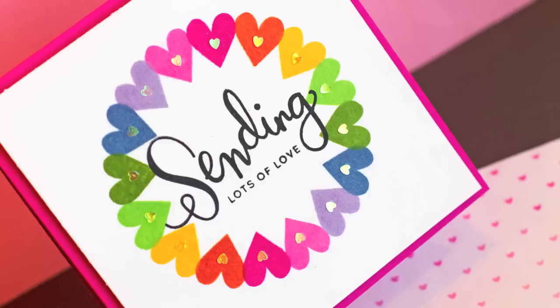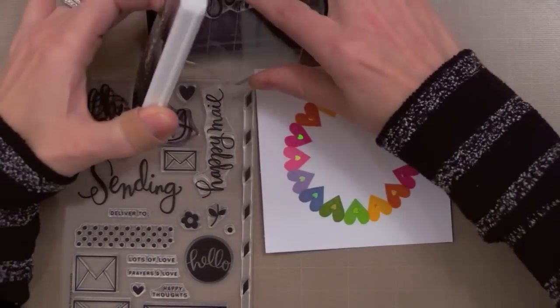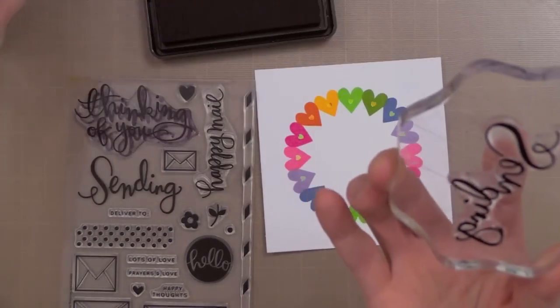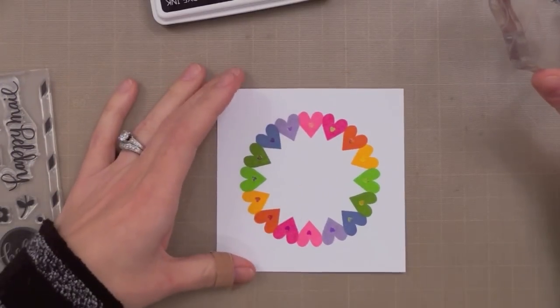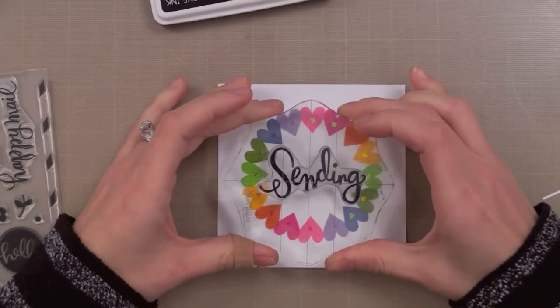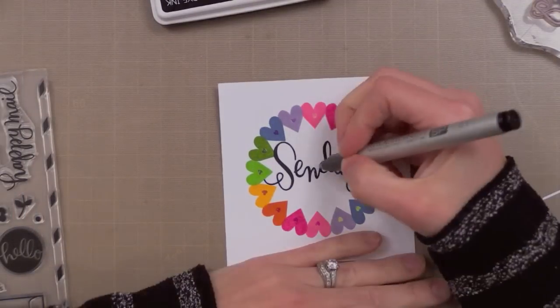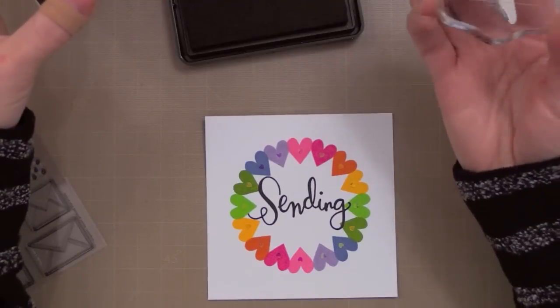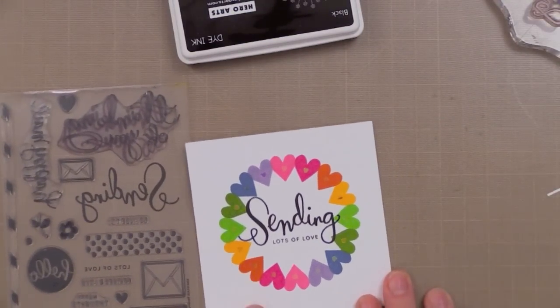Now it's time for the sentiment in the center. I decided to keep this very simple. I have this wonderful sending lots of love image from Simon Says Stamp. My friend Christina designed these. I just love this set. I'm going to stamp the sending with my favorite black ink which is the Hero Arts Dye Black Ink. I'm going to stamp this in the center and I'm using the grid of the mat that is behind my craft sheet to kind of help me make sure that I'm getting this nice and straight on my card and right in the center of the card. Now my stamping wasn't perfect here so I'm going in with a black pen to kind of color over the areas that didn't stamp well and nobody will ever know. Now I'm going in with Lots of Love to finish off the sentiment and stamping that right under the sending.